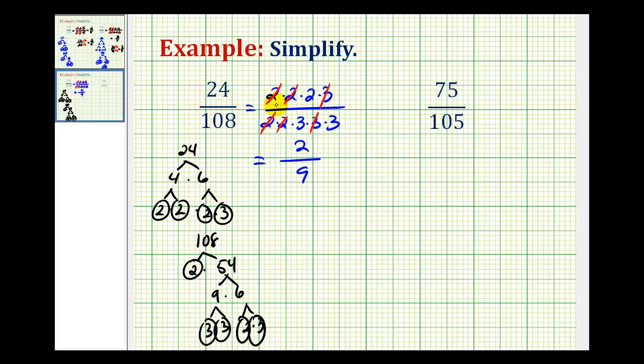Now looking at this fraction in prime factored form, notice the factors that simplified out were two times two times three. So 24 and 108 had a common factor of 12.